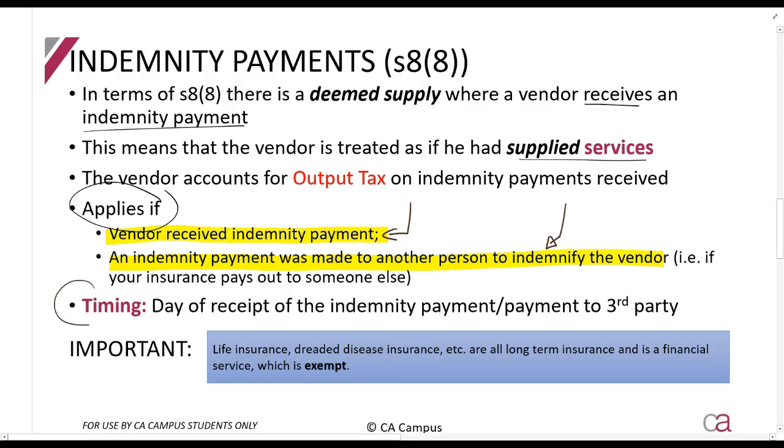The timing - there's no special value rule, but the timing says the day when you receive the payment. Then just an important note here: insurance like life insurance, dreaded disease insurance, all of those things are long-term insurances and are considered financial services which are exempt. So when we're looking at insurance here, we're looking at short-term insurance.